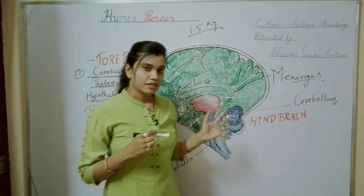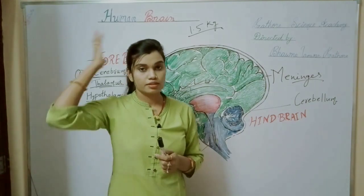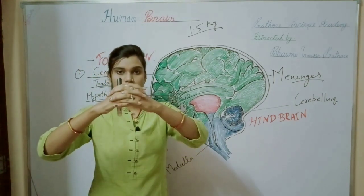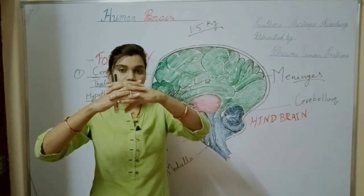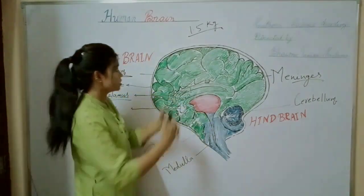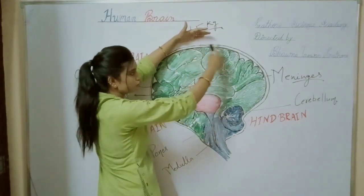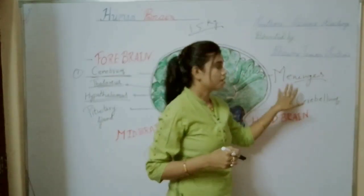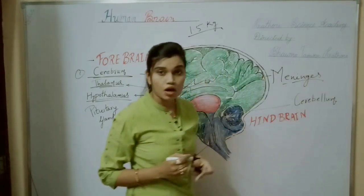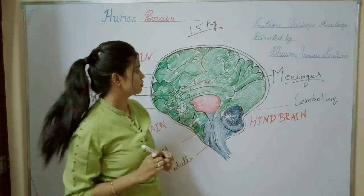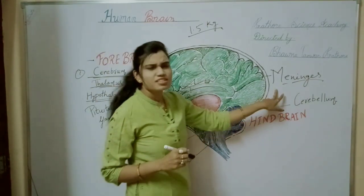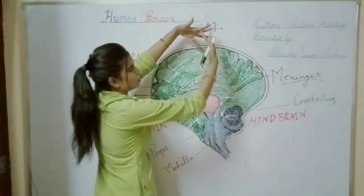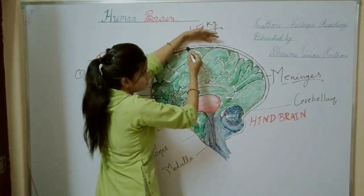Our brain is present at the top of the body, beneath your skull. So like this is your skull, and beneath your skull your brain is present. The outermost layer of the brain is known as meninges. This layer is basically made up of tissues, and it separates the skull from the brain.